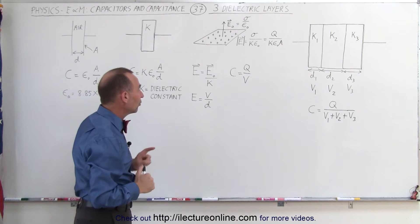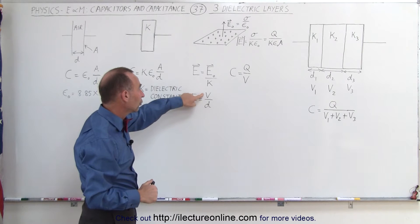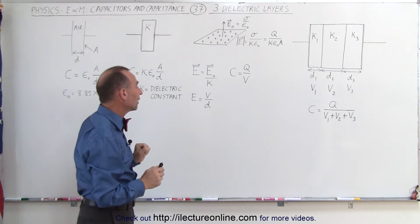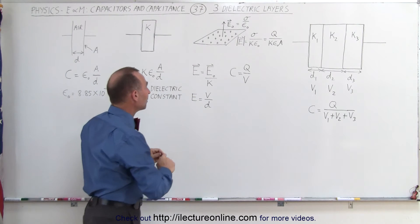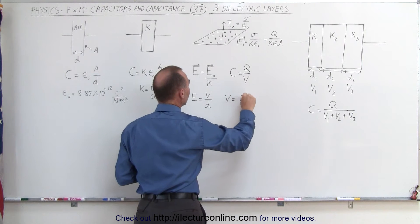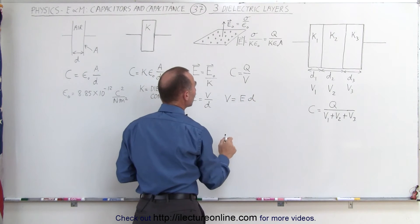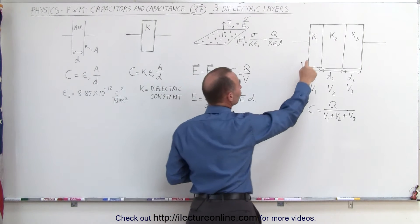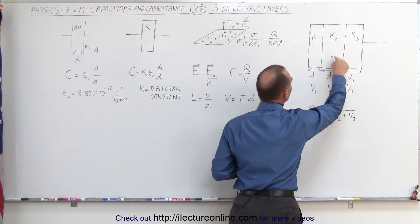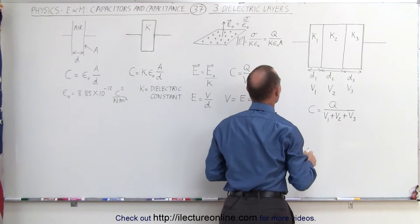We also need to know that the electric field magnitude is equal to the voltage between the plates divided by the distance between the plates. That means we can write the voltage as being equal to the strength of the electric field times d, which means we need to calculate the strength of the electric field in each of these three layers, and that can be done using this equation.